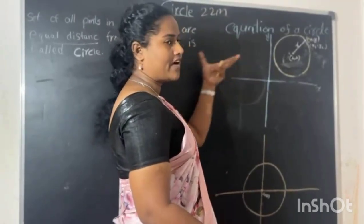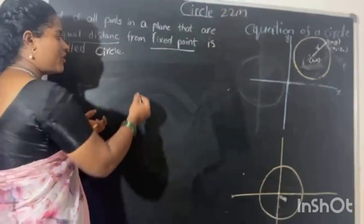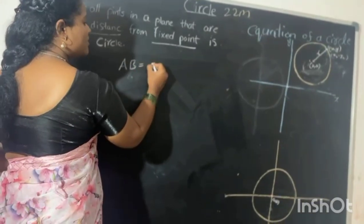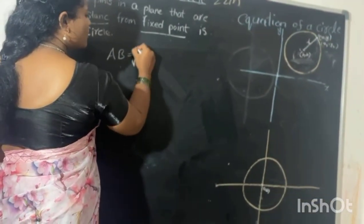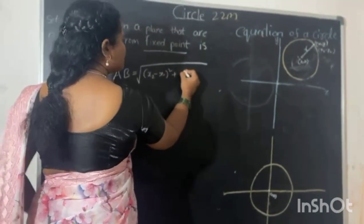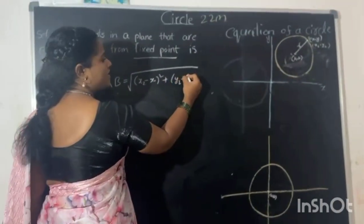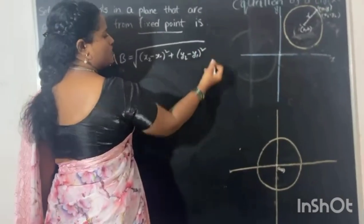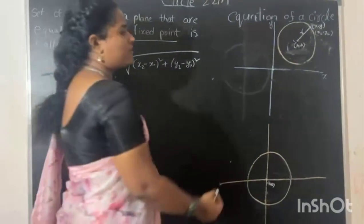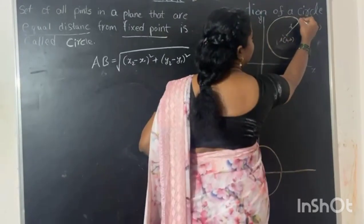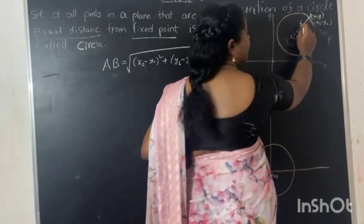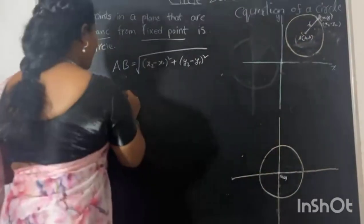I am going to apply the length formula. The length formula is equal to the square root of (x2 minus x1) whole square plus (y2 minus y1) whole square. Now I am going to substitute the center coordinates a and b, and apply the distance from the center.